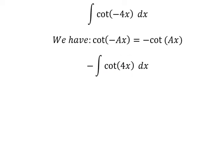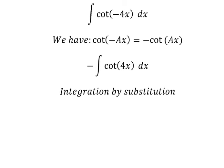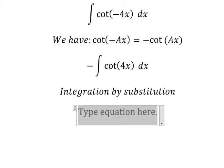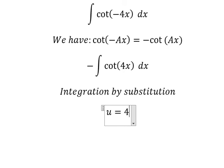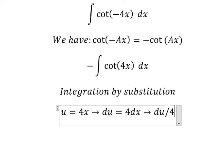Next we use integration by substitution. I will put u = 4x. We take the first derivative on both sides and we have du = 4dx. Since we don't have a 4 next to dx, we divide both sides by 4 to get du/4 = dx.